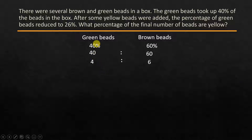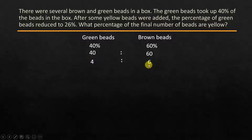Now what we are trying to do here is: green beads is 40%, brown beads is 60%. The same can be represented as 40 is to 60 in ratio. On simplification, that will become 4 is to 6 — because divided by 10 gives 4 is to 6 — and that will become 2 is to 3.